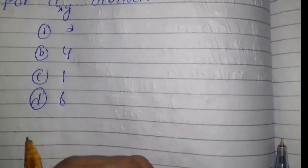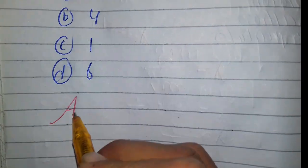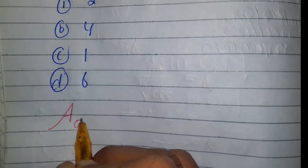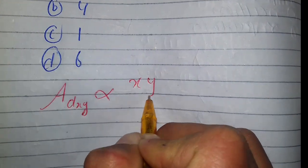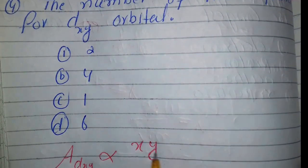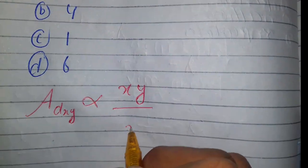We know that the angular part of the d_xy orbital is directly proportional to XY multiplication, that is XY by R squared.